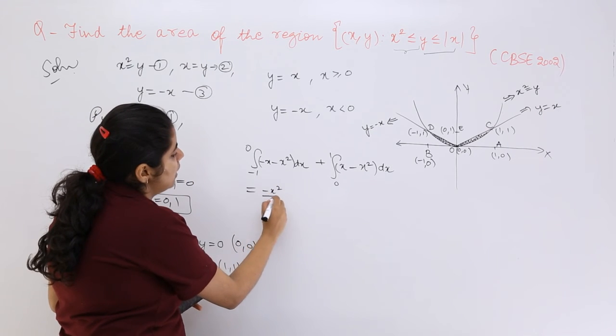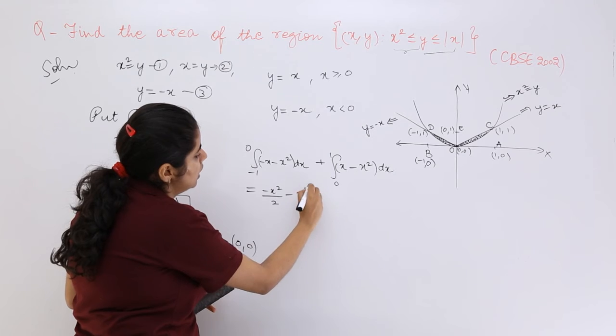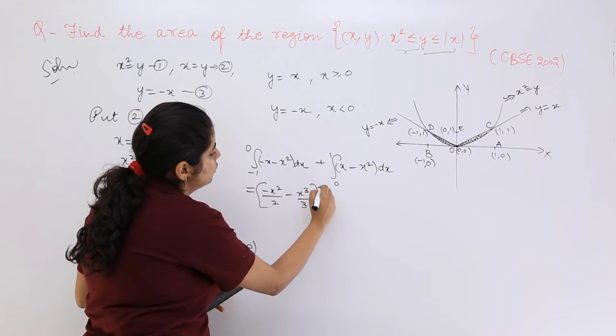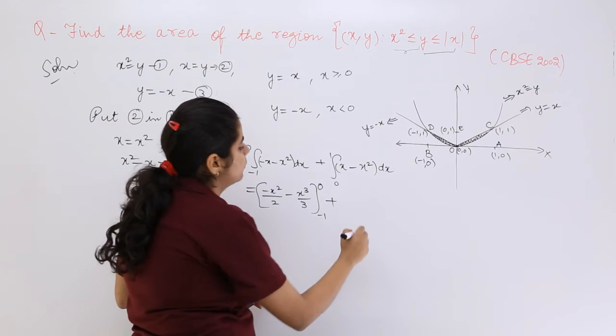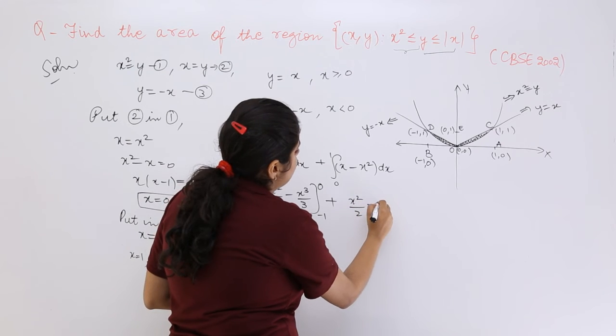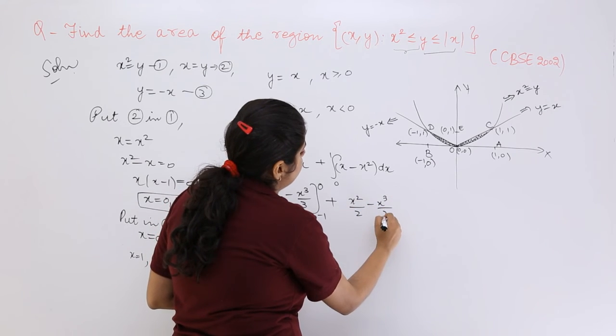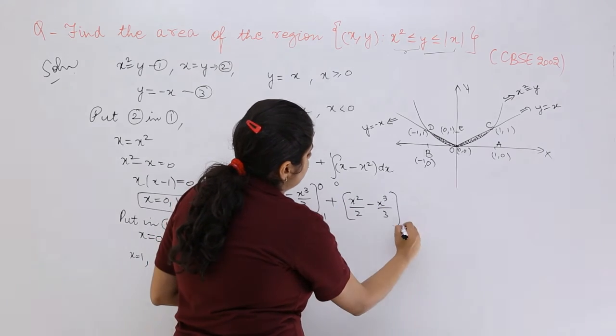-x²/2 - x³/3 from -1 to 0, plus x²/2 - x³/3 from 0 to 1.